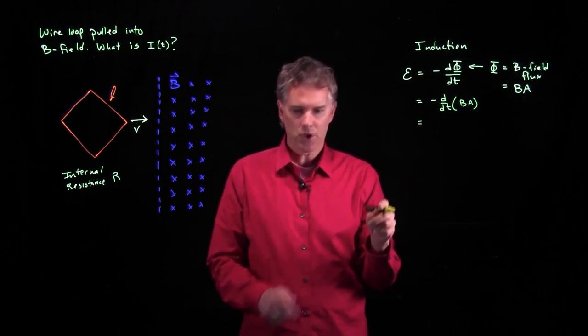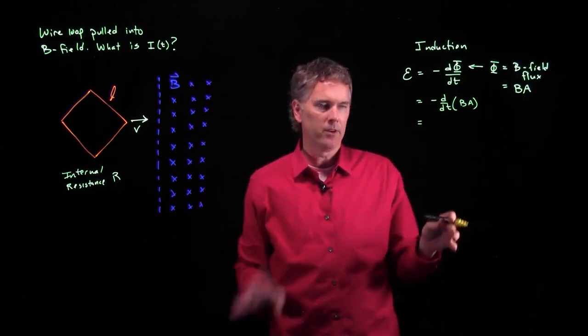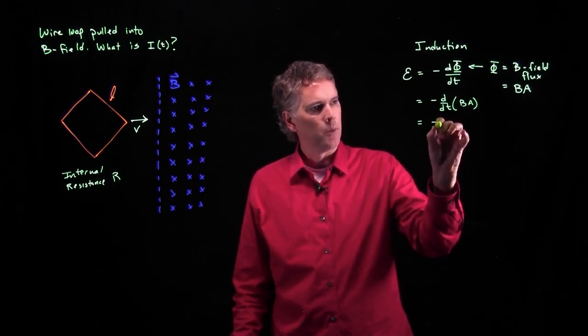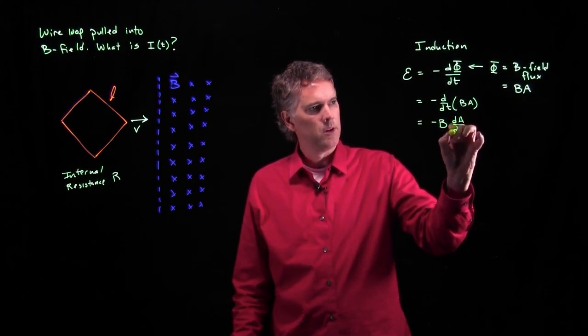But B isn't changing, right? B is just the strength of the B field that's given. It doesn't change as a function of time. So we get negative B times dA/dt.